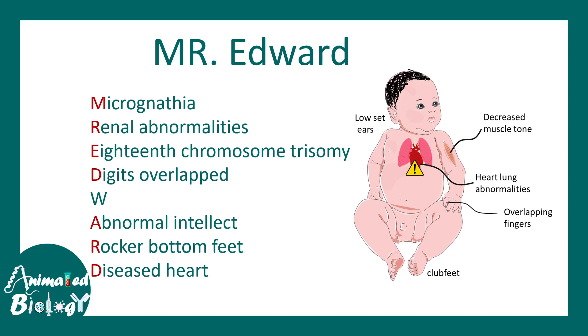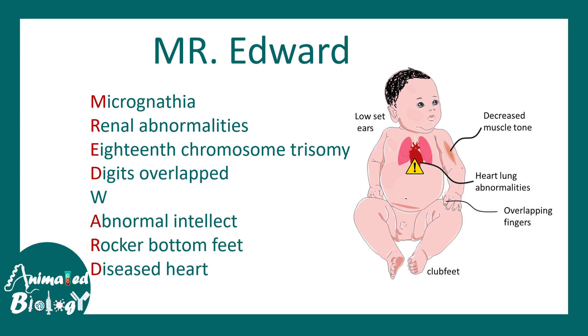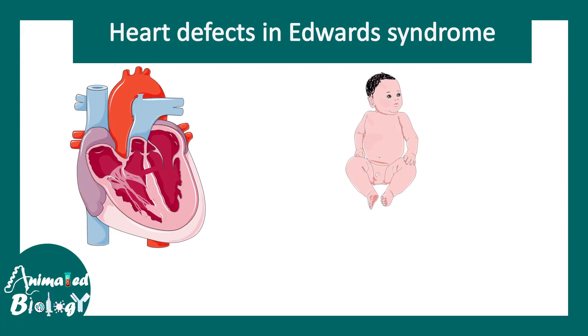A stands for abnormal intellect, R for rocker-bottom feet, and D for diseased heart. These babies don't survive long because they have profound heart defects.